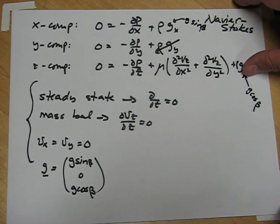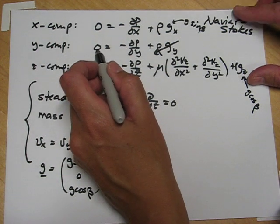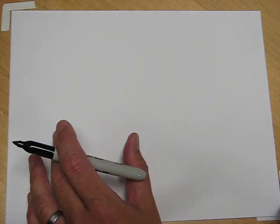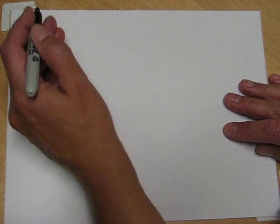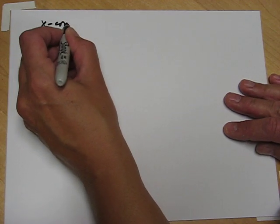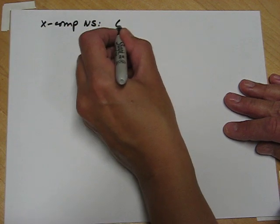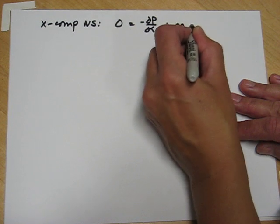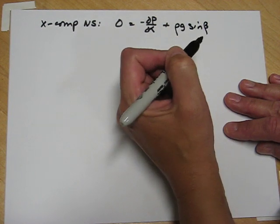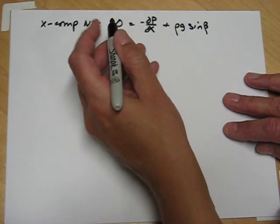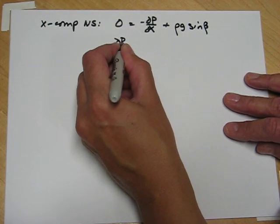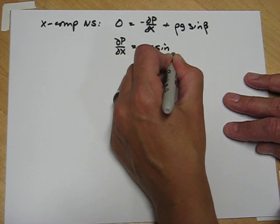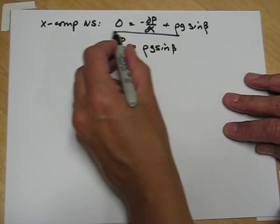So now the first two components, the x and the y component of the Navier-Stokes have simplified quite a bit. Let's take a look at the final results. We have the x component of the Navier-Stokes is zero equals minus dp/dx plus rho g sine beta, which tells us that if there's a pressure gradient in the x direction, dp/dx, it must be given by rho g sine beta, which is just the hydrostatic pressure contribution.